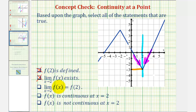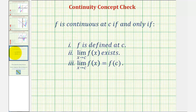Next, the limit as x approaches 2 of f of x equals f of 2, meaning we can determine this limit by performing direct substitution, which in this case is true. Notice how f of 2 is equal to negative 3, which is also the same as the limit as x approaches 2. And since all three of these statements are true, we can say that f of x is continuous at x equals 2. I'll leave you with the three conditions that must be met in order for a function to be continuous at a point. I hope this was helpful.